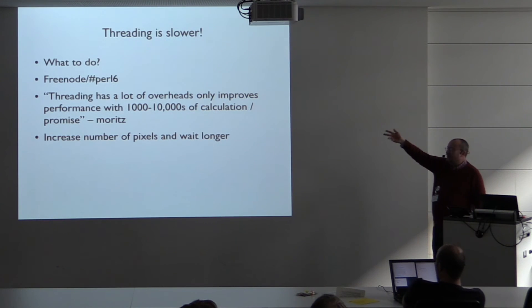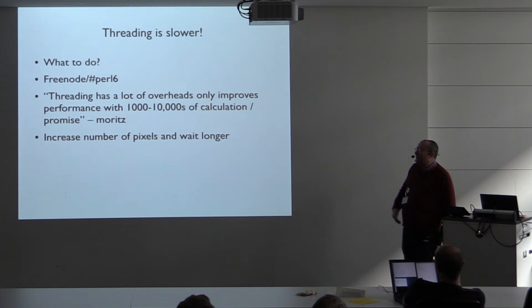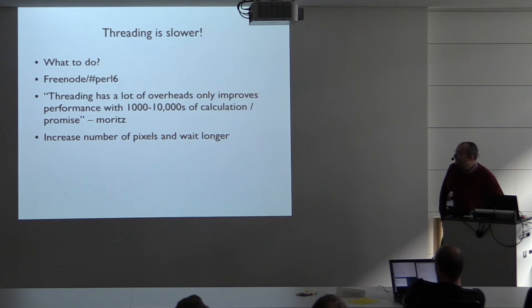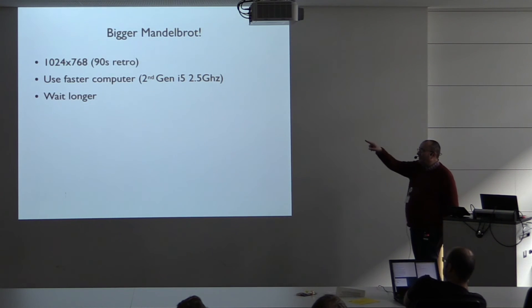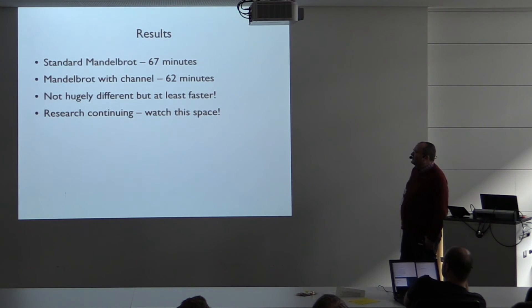So what to do? I just went on to IRC and I asked Moritz. Well, Moritz answered my question. And I'm paraphrasing here and hopefully I haven't misrepresented him too badly. But basically, threading, as I discovered, has a lot of overhead. And the number of calculations that I was doing on my small image wasn't really enough to show any performance improvement. The simple solution is just to increase the number of pixels and wait longer. So I created a bigger Mandelbrot. I've gone from the 80s to the 90s now and I have 1024x768. I've also got a faster computer and I waited longer. And the image I get at the end is prettier.